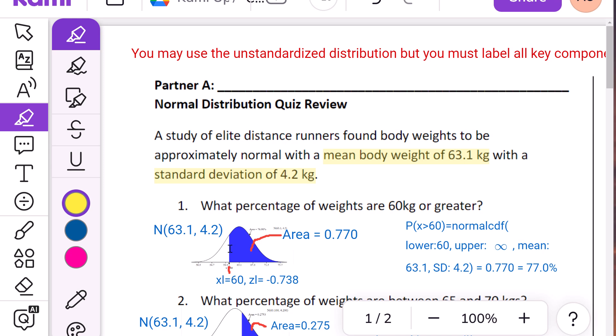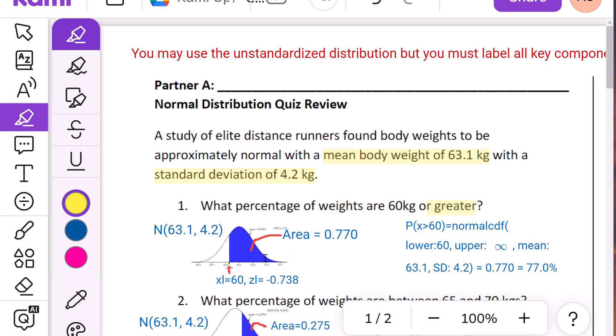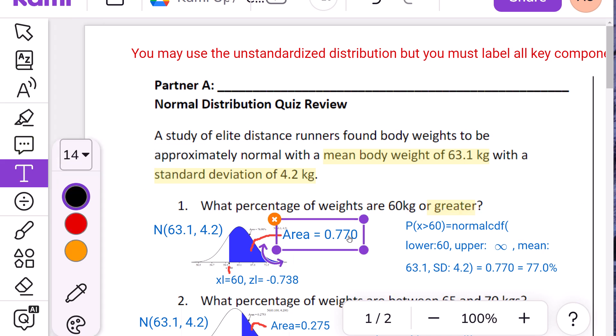Make sure you label your, in this case, what percent of weights are 60 kilograms or greater. That means you're going to shade to the right. And so you would have your marker at 60 and then you would shade here. And your answer is the area. So that's your percentage. If it says percentage, it would be ideal to give the answer in percent. So 77% of the area would be appropriate.